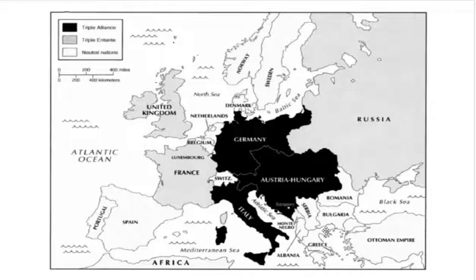Italy was also looking for more territory, especially along the Adriatic coast. So while part of these alliances is about helping your friends, part of it is also that each country sees something in it for themselves — whether that's more power or more territory.